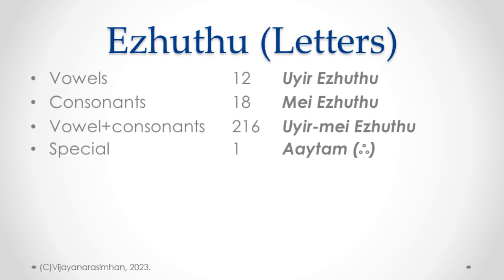Tamil is what we call an alpha-syllabary, an Abugida language, wherein when a vowel comes after a consonant they will be clustered and combined into a single symbol. We call them vowel-consonant combinations, or Uir Mei Erut. So 12 vowels together with 18 consonants — 12 into 18 will be 216 — giving us 216 Uir Mei Erut.